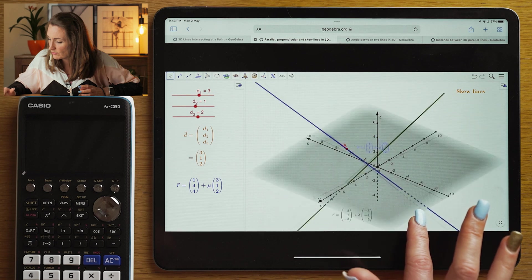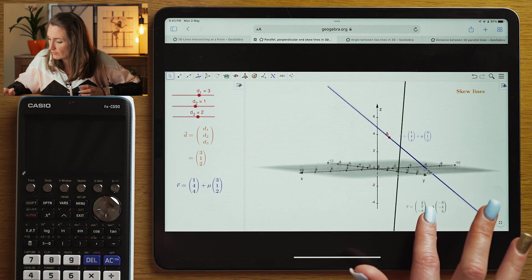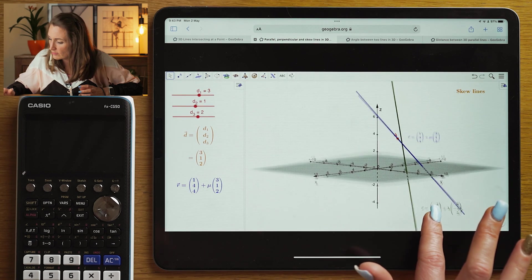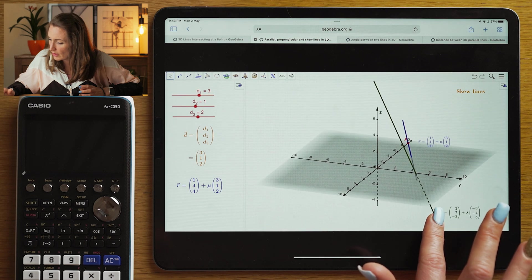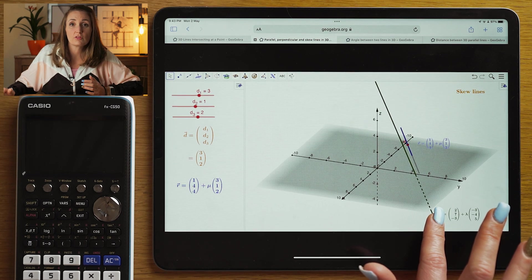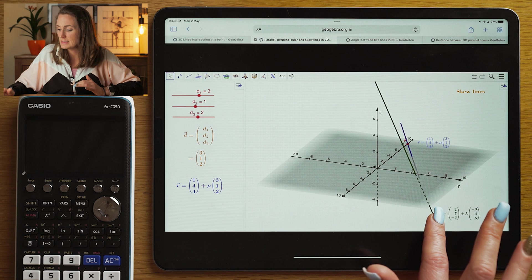And you can look at this from a different perspective. It looks there like they will intersect, but once you spin it round and check the other perspective, you can see that those lines will in fact miss each other.